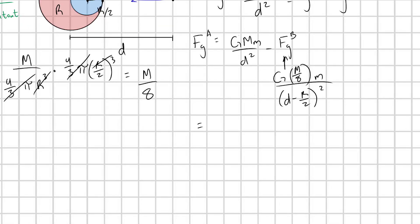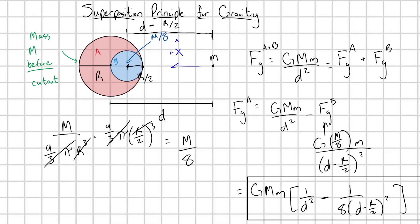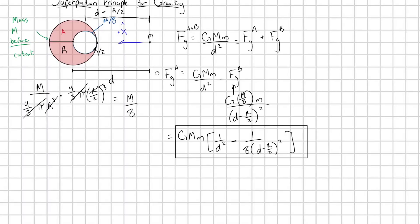Let me go ahead and write this out. I'm going to pull out the like terms. So I'm going to have GMm times 1 over d squared minus 1 over 8 times d minus R over 2 squared. And there we go. That's going to be the force on our little mass from just the A region that if we took this planet here, and then we hollowed it out. We got rid of the B region. That would be the remaining force.